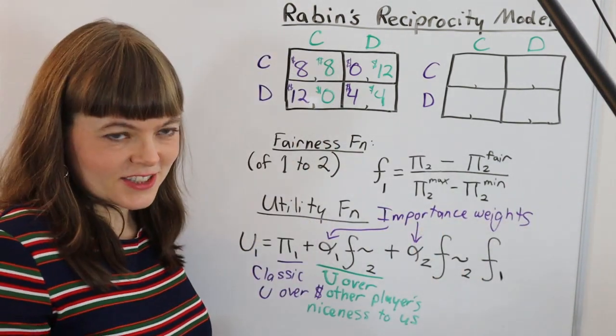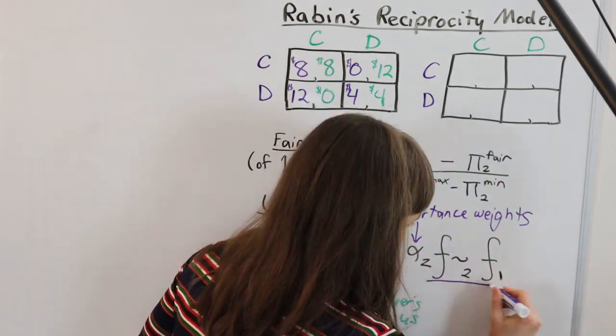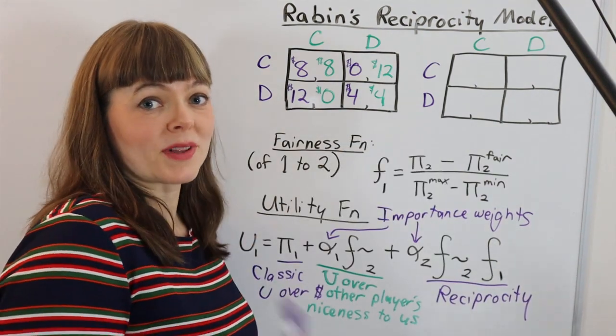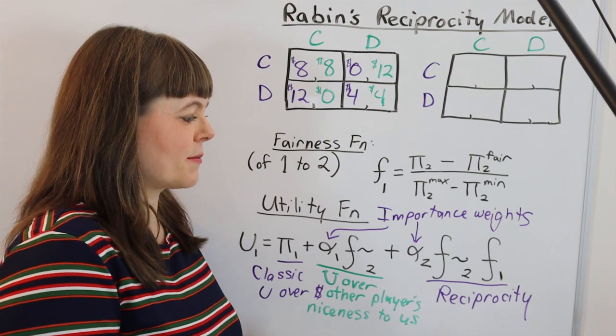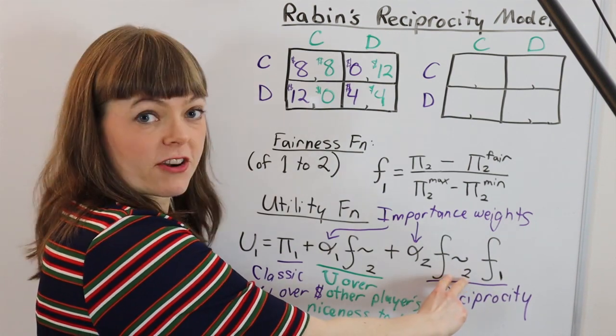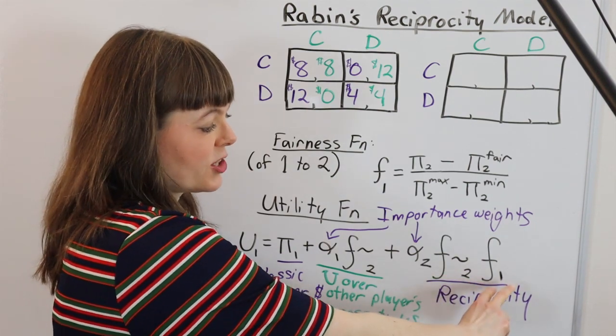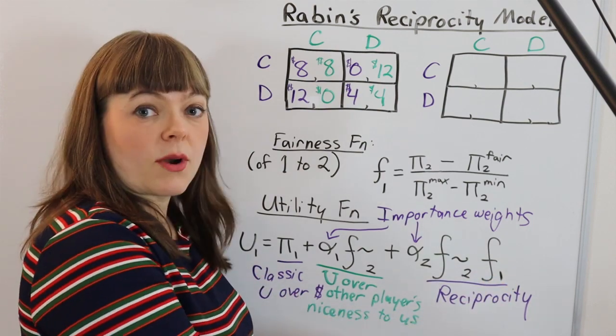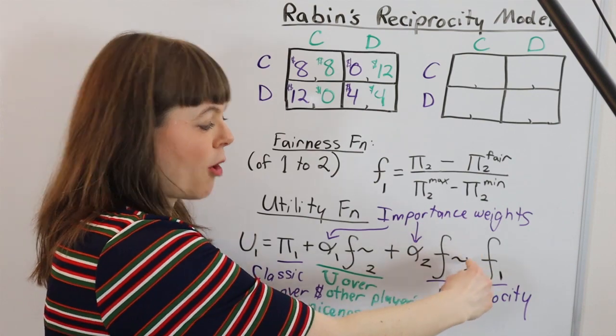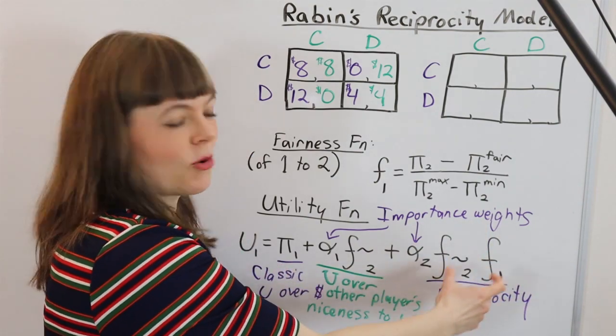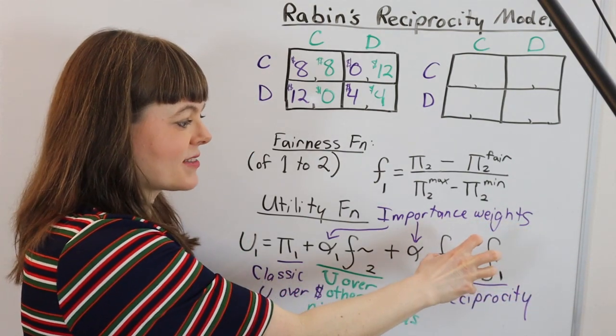Okay, and then the last term is the reciprocity term. And this term is really brilliant in how simple it is while still capturing the concept. So it's basically their fairness toward you times your fairness toward them. So if they're mean and this is a negative term, then you get positive utility from also being mean to them, because then you have two negatives which become a positive.